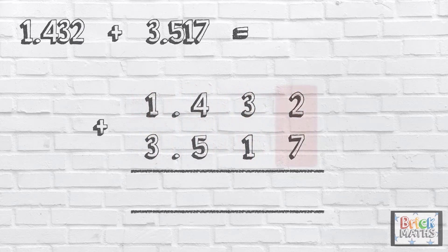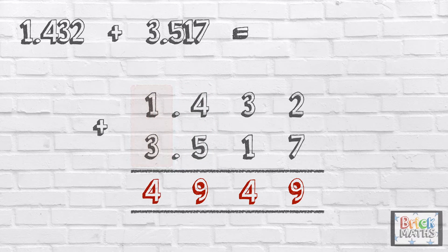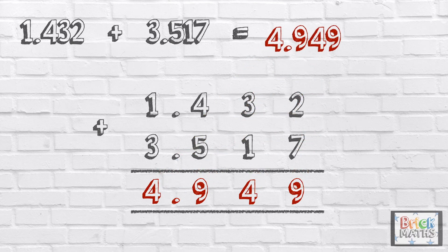So we start with two thousandths add seven thousandths, which is nine thousandths. Then three hundredths add one hundredth, which is four hundredths. Four tenths add five tenths, which is nine tenths. And finally one add three, which is four. Make sure you put the decimal point in the correct place. So the answer is four point nine four nine.